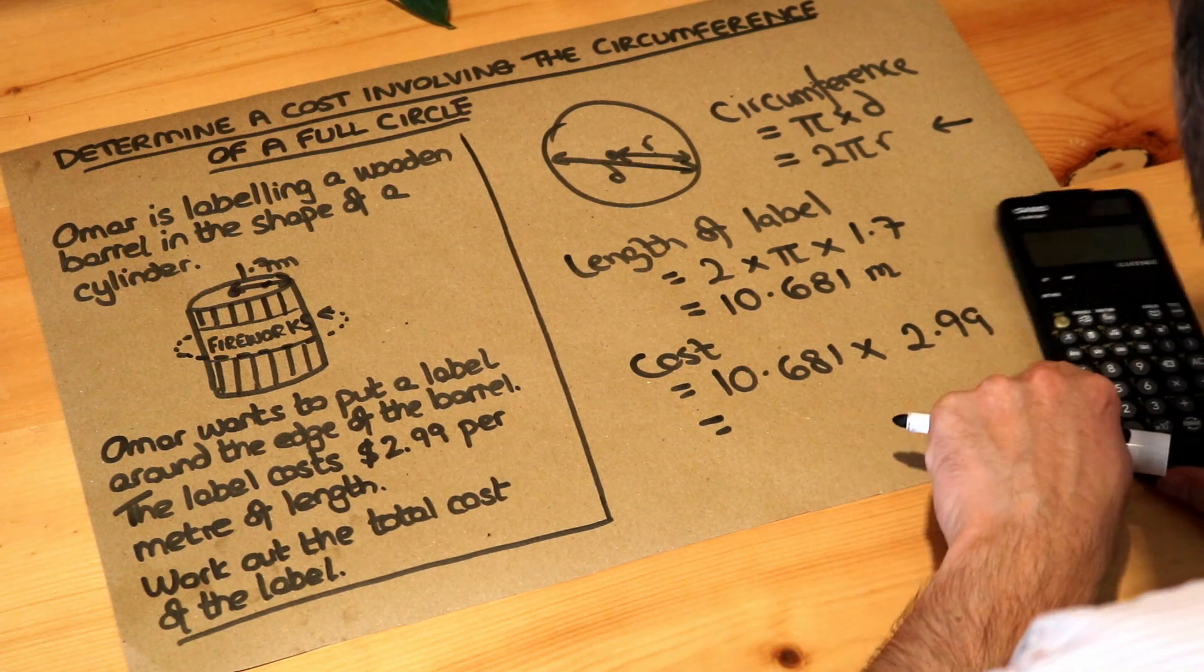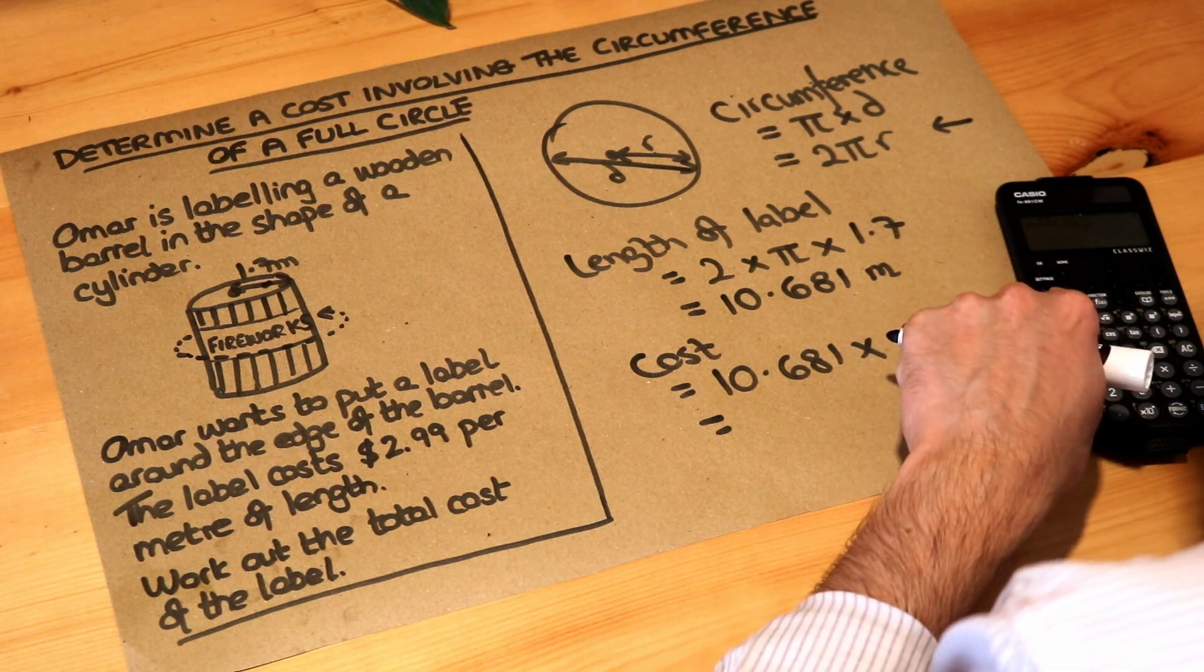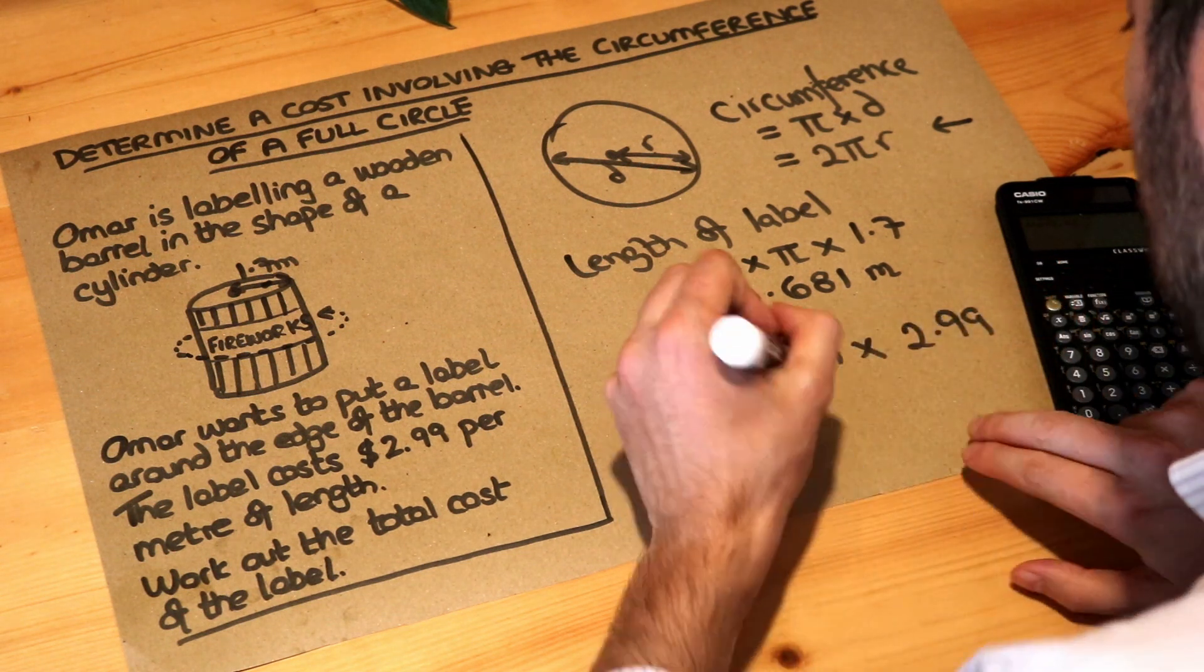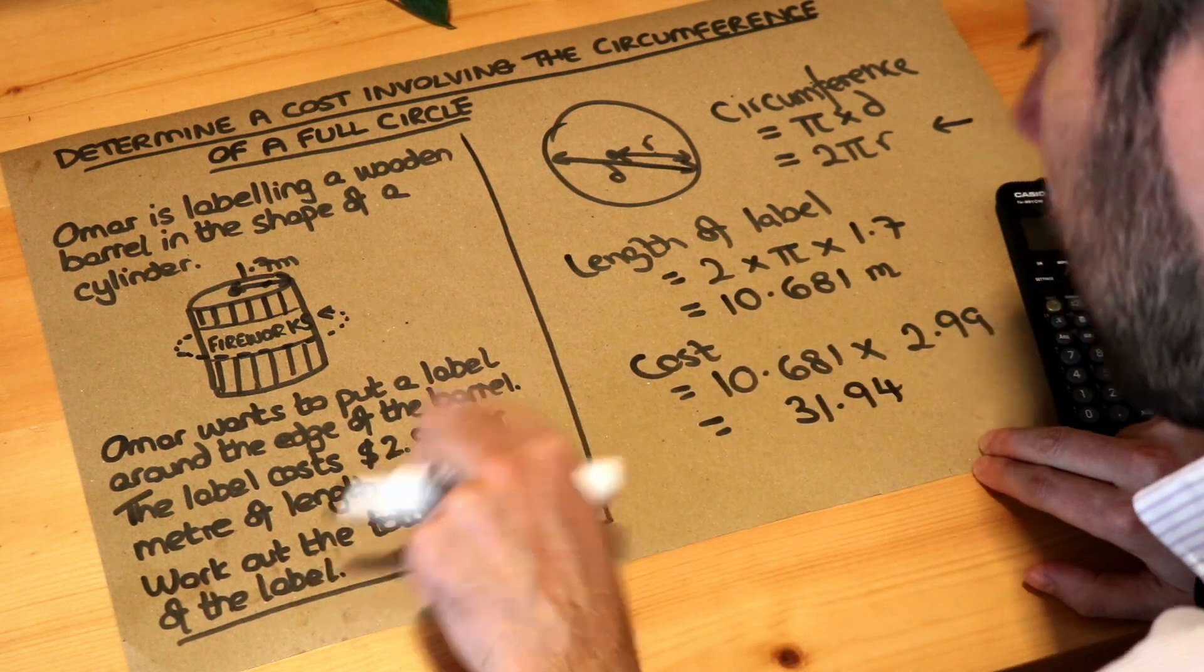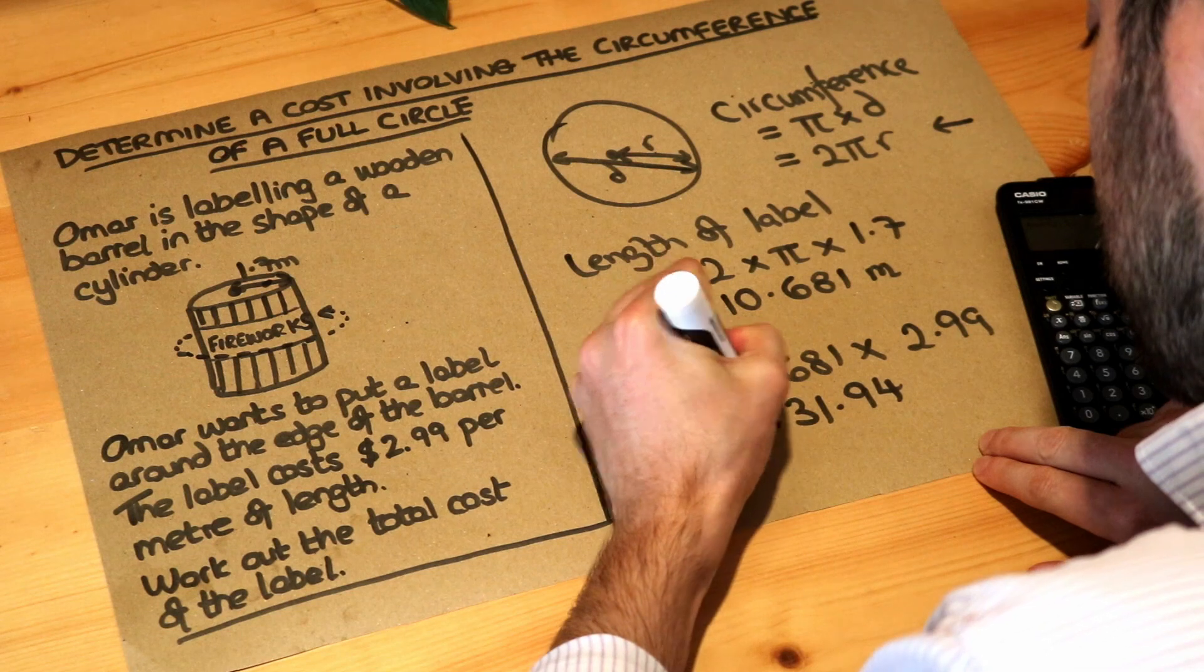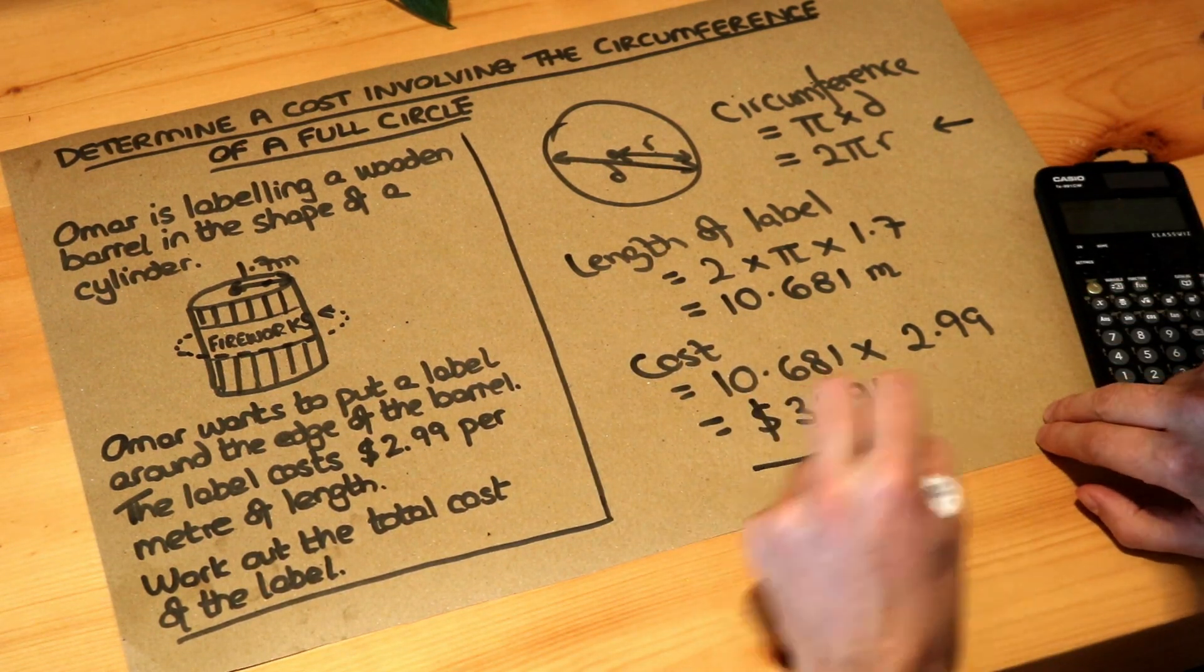So I just need to press the times key and then 2.99 and then equals, and I get 31.94 and that will be in dollars. So it's $31.94 and that is the final answer.